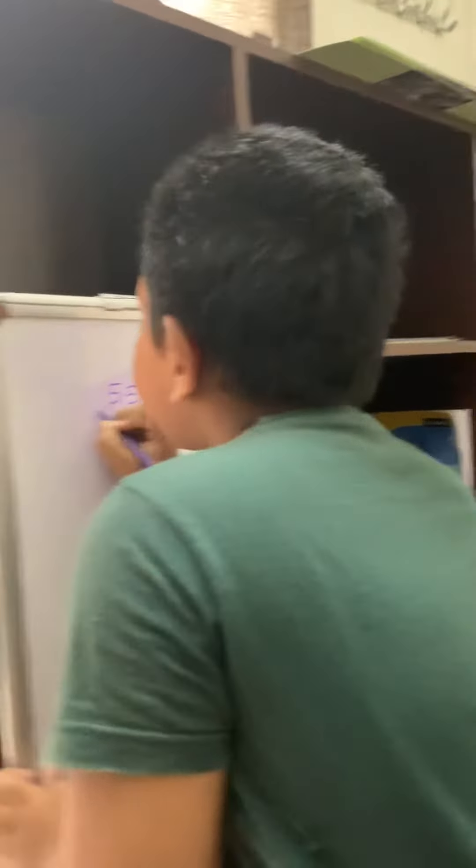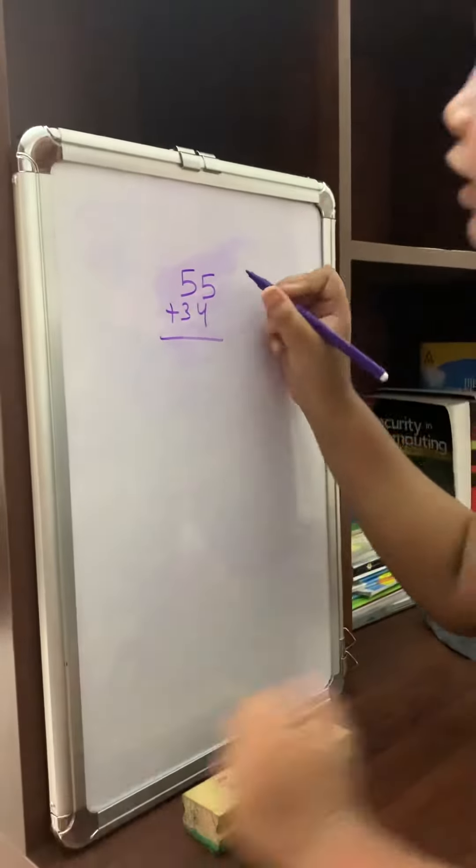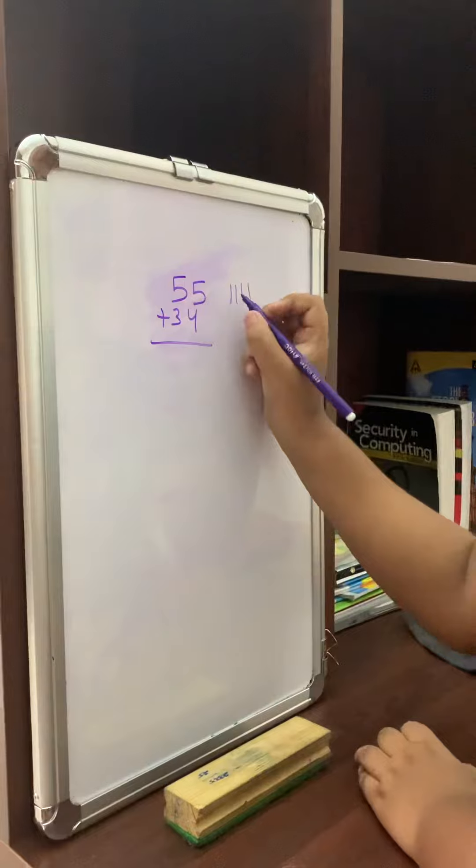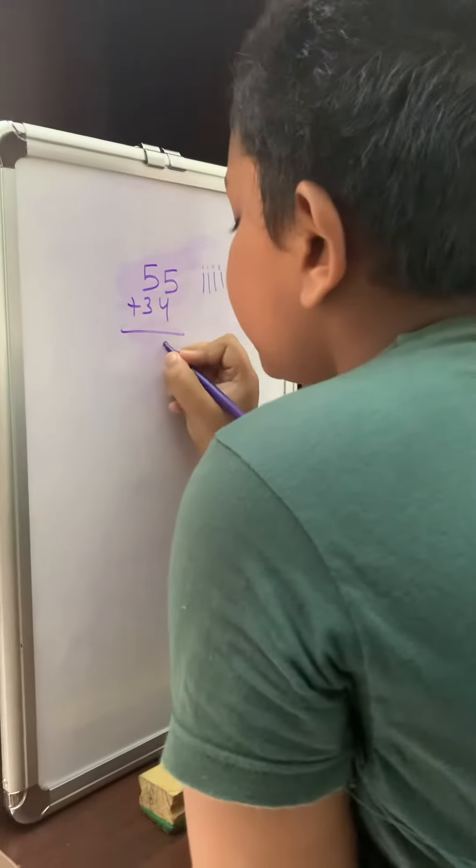55 plus 34. So here, starting with the ones place: 5 plus 4. Counting: 1, 2, 3, 4, 5 after 6, 7, 8, 9. I am going to write 9.